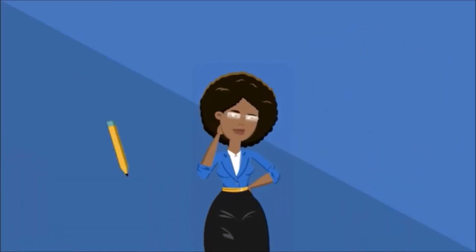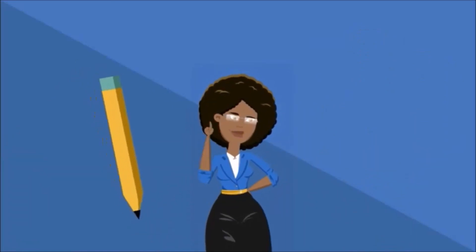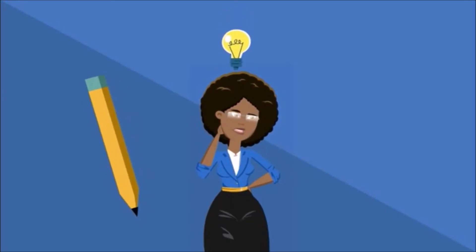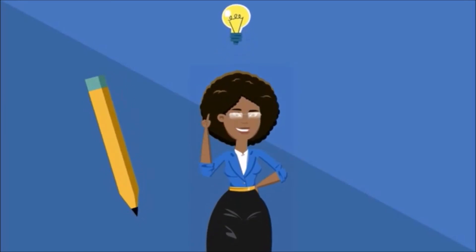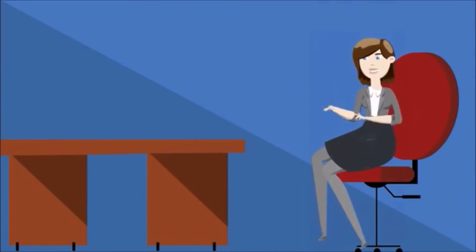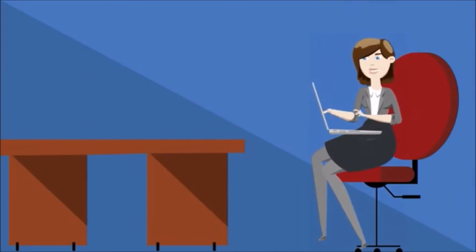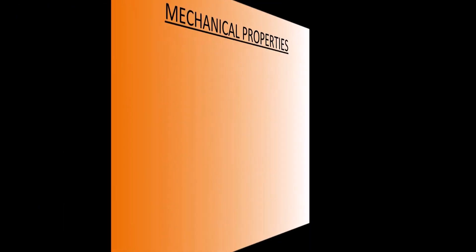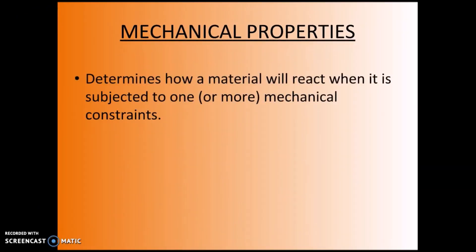Have you ever wondered why pencils are never made of glass or rubber? Why are objects made of certain materials and not others? Different materials have different mechanical properties. A mechanical property determines how a material will react when it is subjected to one or more mechanical constraints.